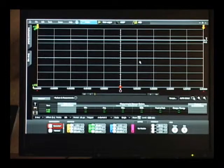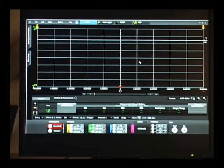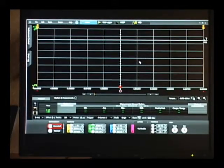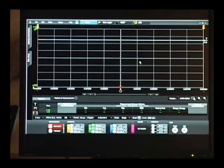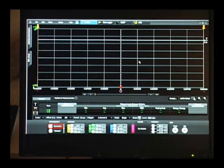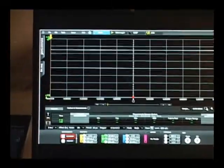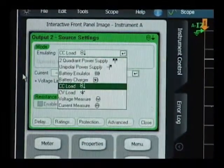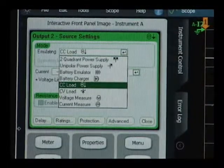Here we have the 14585 control and analysis software user interface controlling the DC power analyzer mainframe. The first thing we need to do is set up our instrument control. So here on the right I'll pull up a control panel for setting the instrument settings.